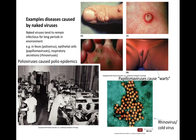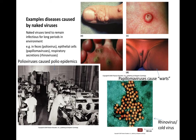Before the polio vaccine, patients lived in devices called iron lungs, which cycled through positive and negative pressure to help them breathe. It was hoped that polio could be eradicated through vaccination, but there have been challenges. Two polio vaccines have greatly reduced the worldwide occurrence of polio, and we'll discuss those along with the problems encountered.